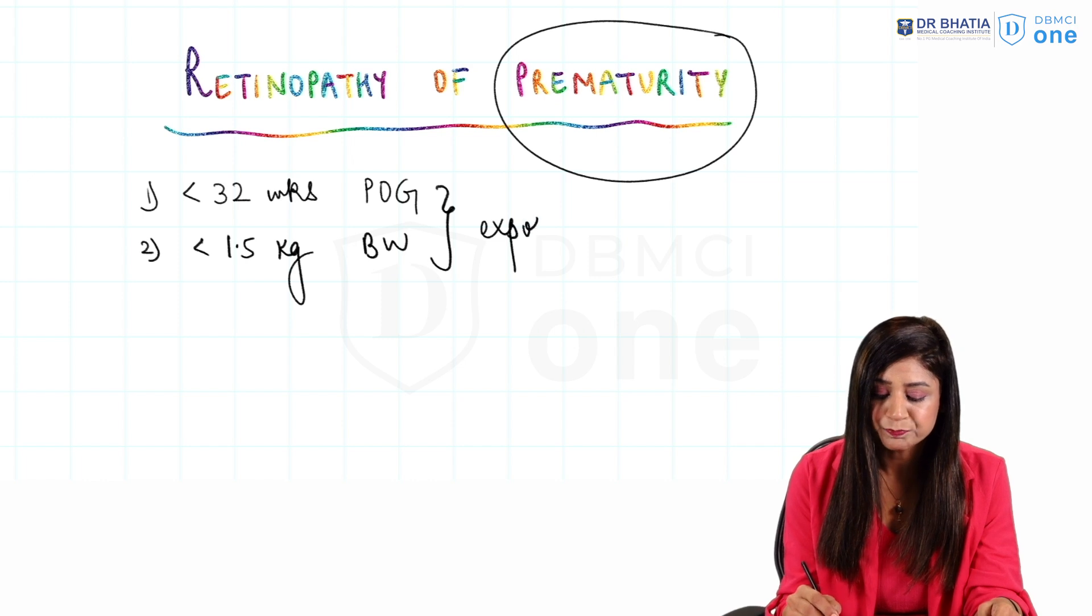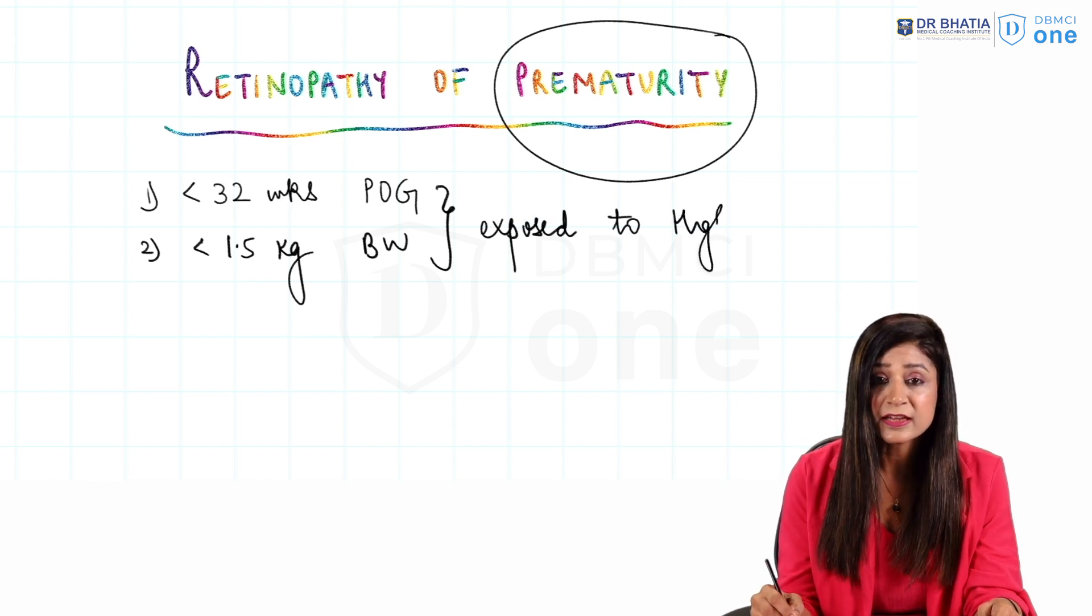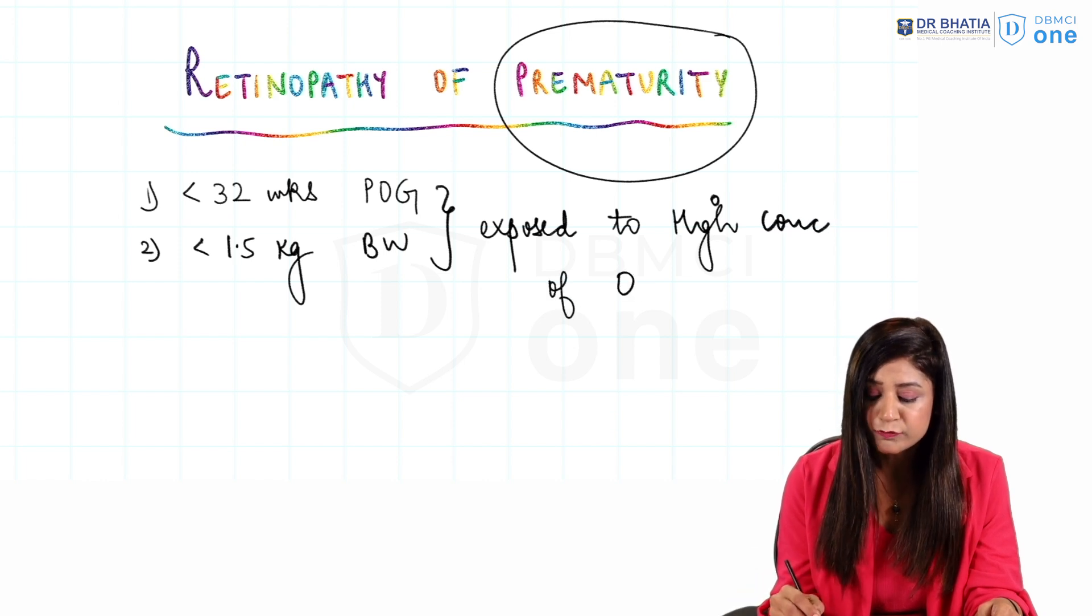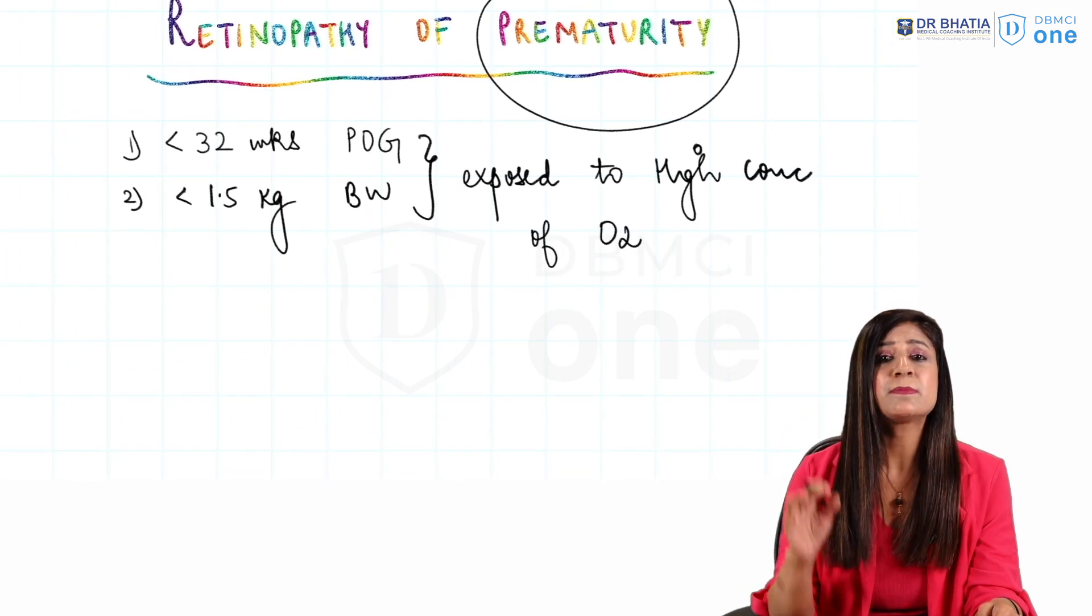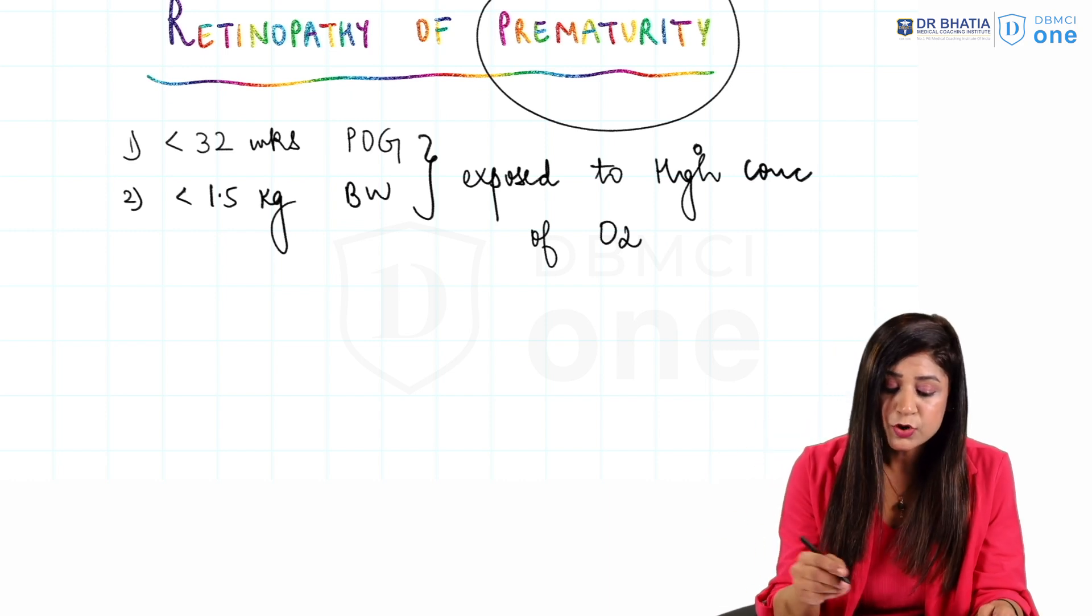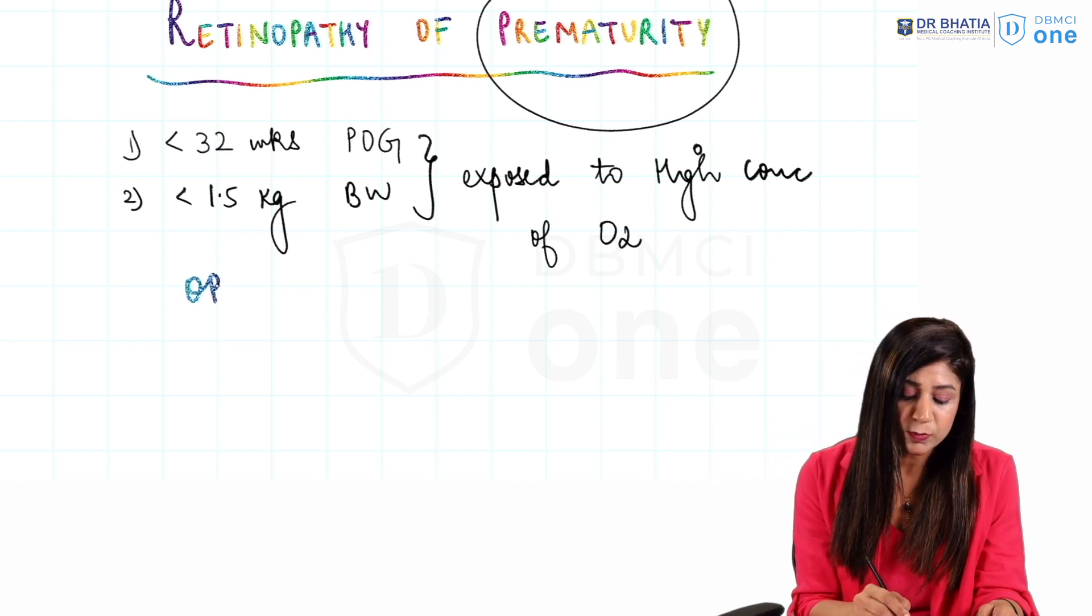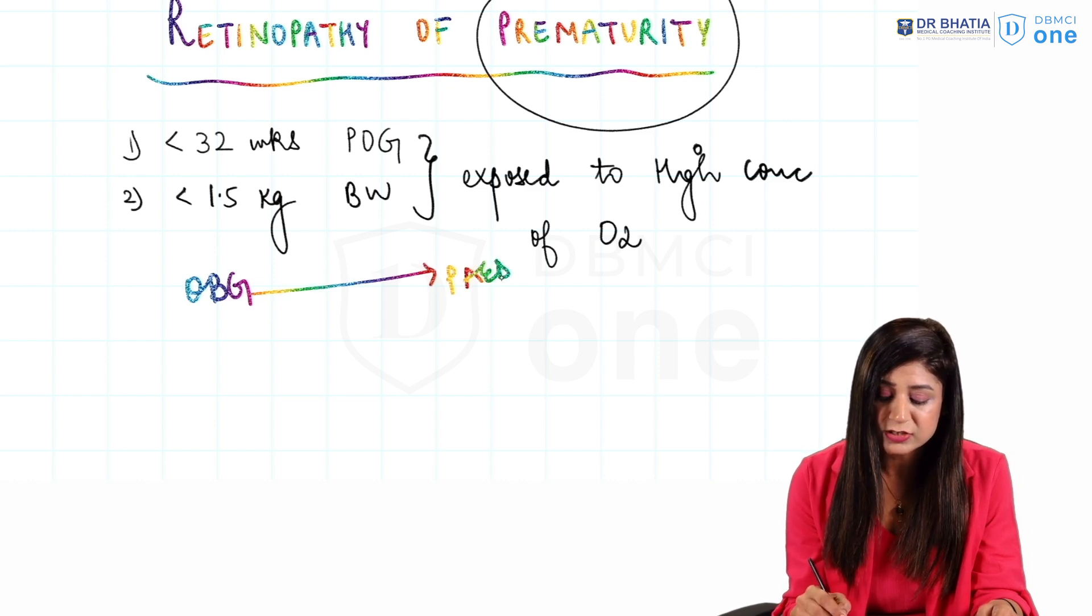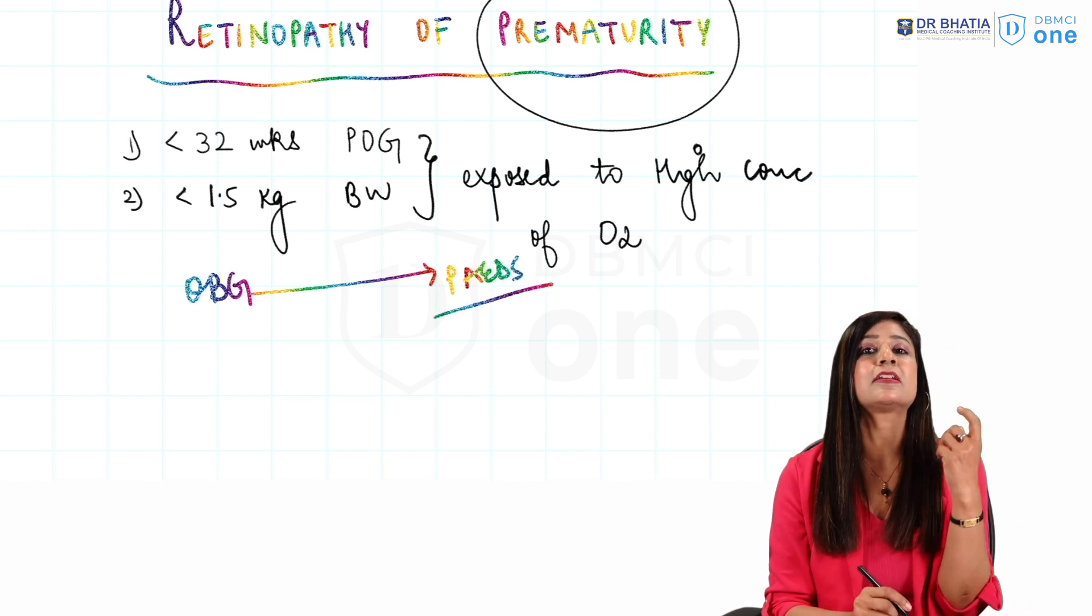exposed to high concentration of oxygen. Now obviously these kind of babies will not be with the ophthalmologist from the beginning, right? So this baby will be with the OBG people and they will refer it to the pediatrics. And it is the duty of a pediatrician that if it is